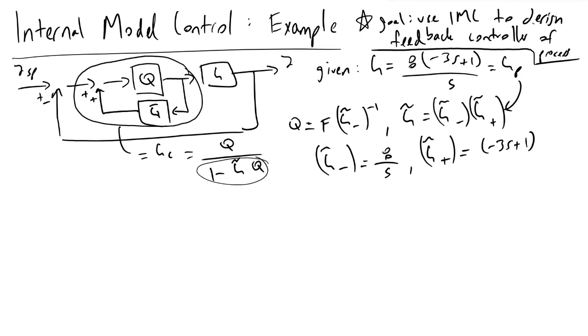1 minus G tilde times Q is equal to 1 minus G tilde plus times G tilde minus times G tilde minus inverse times F.